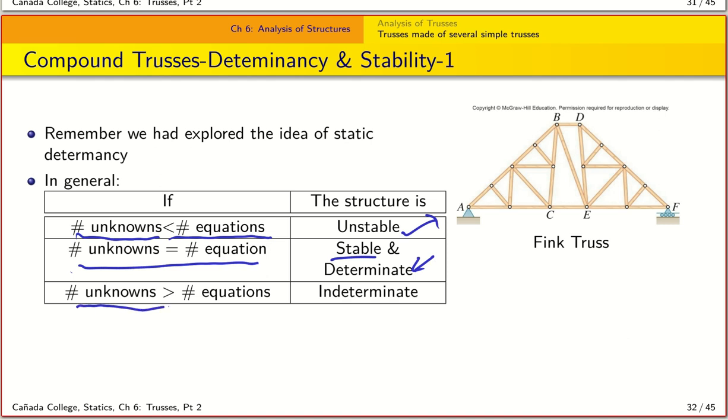On the other hand, if the number of unknowns was greater than the number of equations, then we could have a stable system, but it is indeterminate because we will not be able to calculate all the unknown forces.